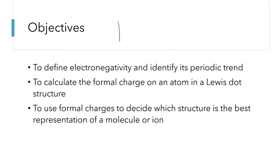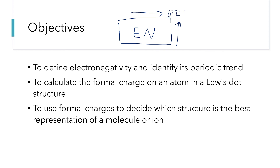So in this video, we defined electronegativity — if this is a rough outline of the periodic table, the biggest values are found in the upper right corner, ignoring the lighter noble gases that don't really form compounds. For calculating formal charge, we take the number of valence electrons on an atom and subtract half of its bonding electrons and all of its lone pair electrons. When deciding which structure is the better representation, we want the one with the smaller formal charges, and the one that puts the negative formal charges onto the more electronegative element.